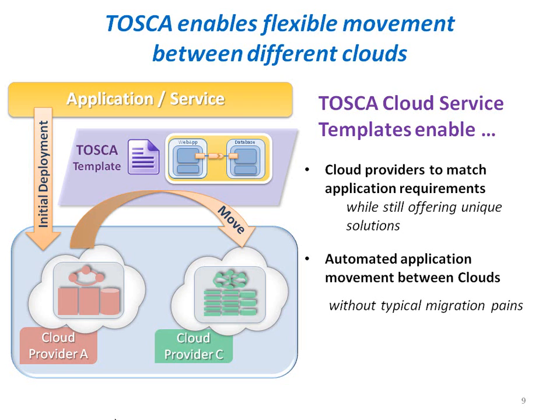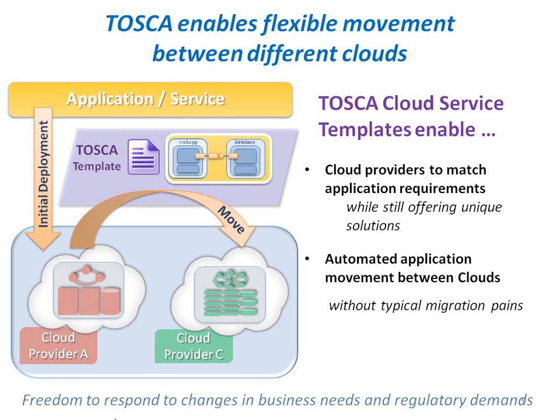This flexibility helps meet changing technical, business and regulatory conditions. For example, the upcoming holiday season may cause increased transaction throughput requirements for a retail cloud application that cannot be met by the current cloud provider. Or new healthcare privacy regulations may require moving an application to a provider who can offer sufficient audit and privacy capabilities. That freedom comes from the inherent lower cost, effort and risk that the Tosca modeling approach provides for such operations.